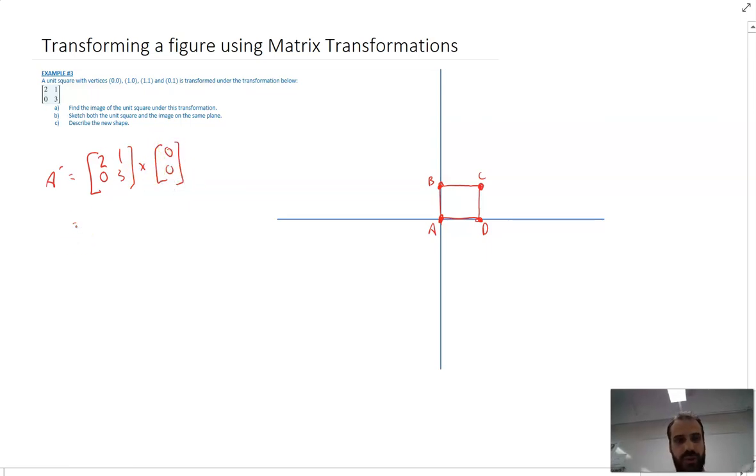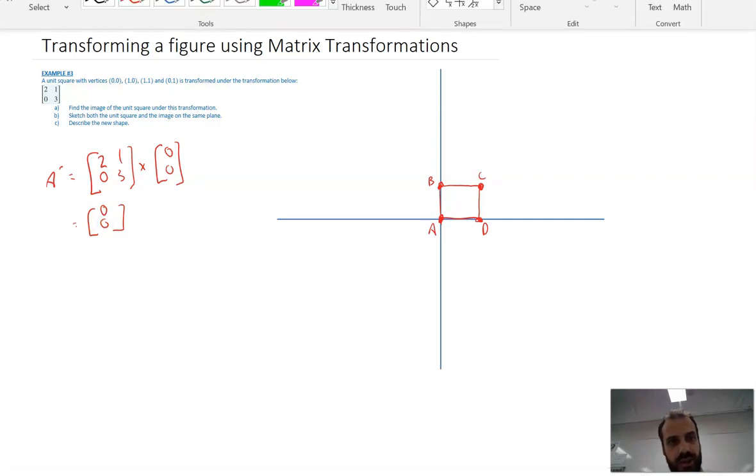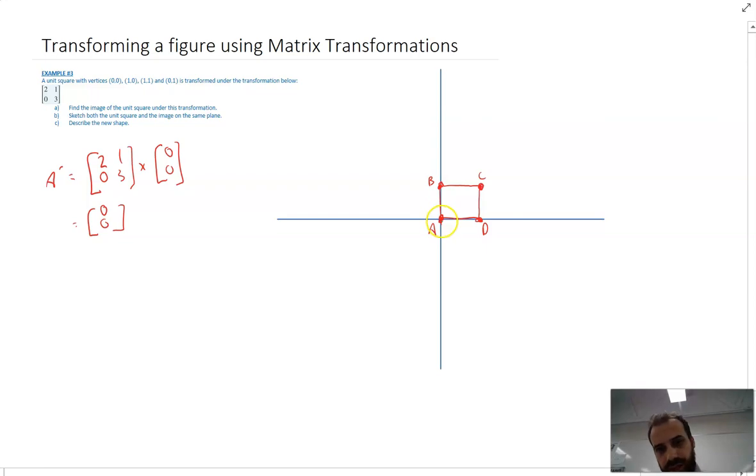Now take my word for it, when we do this matrix multiplication we're going to get a point of (0,0). So our new point is going to sit directly on A itself, and we can call that new point A dash.